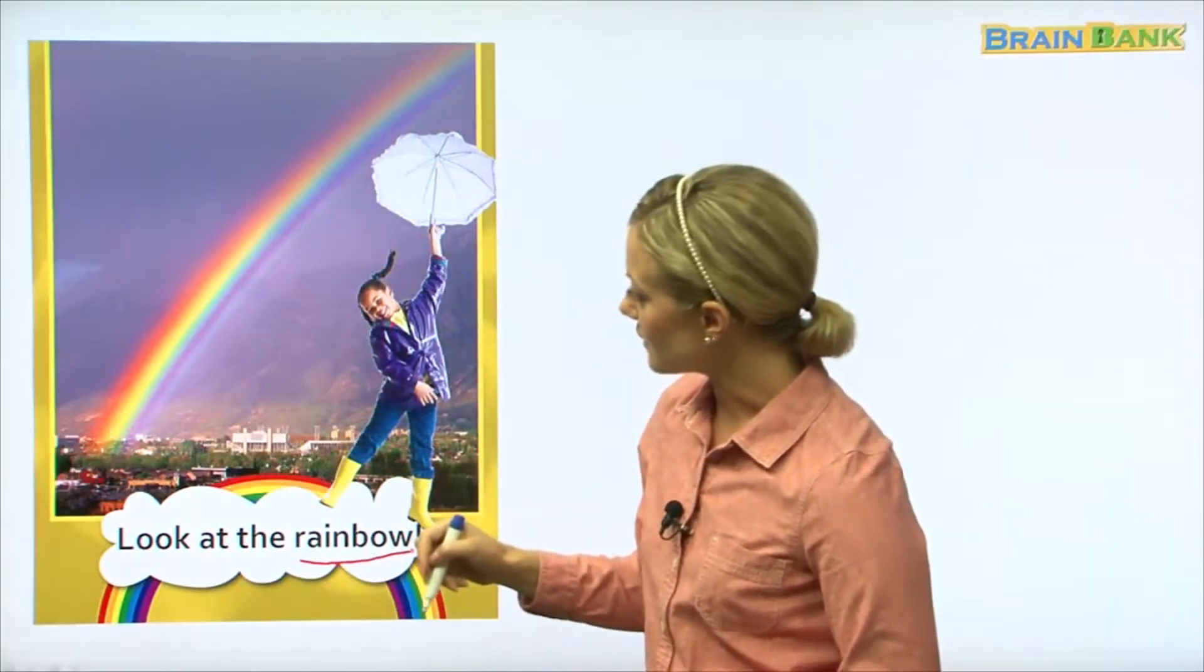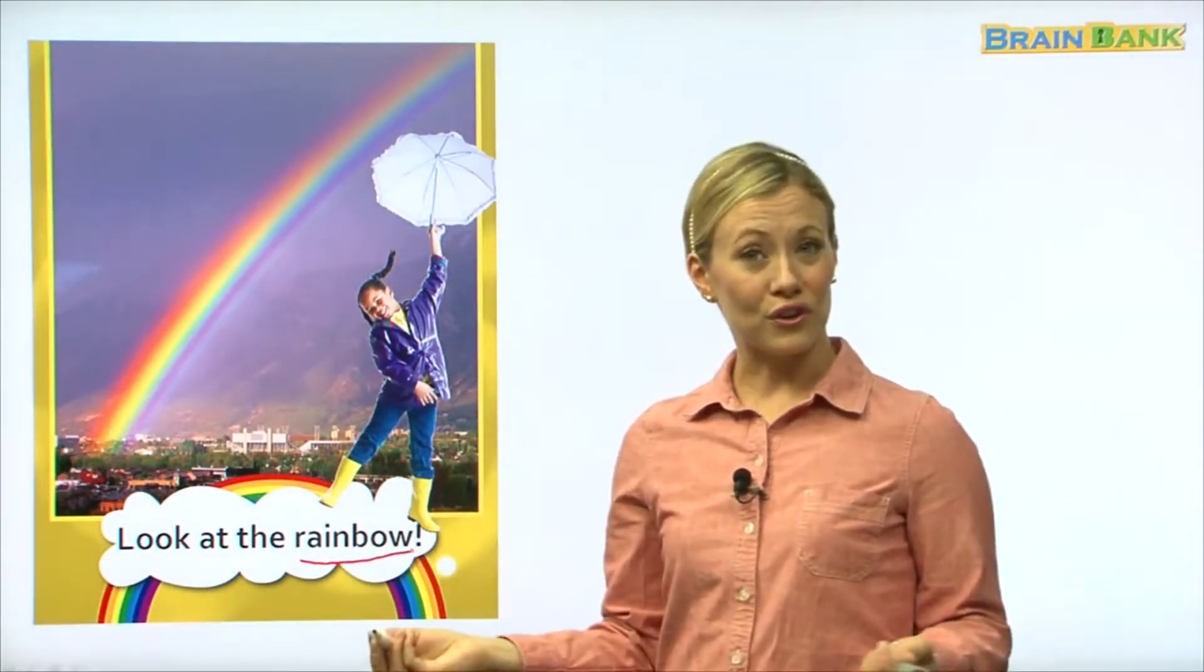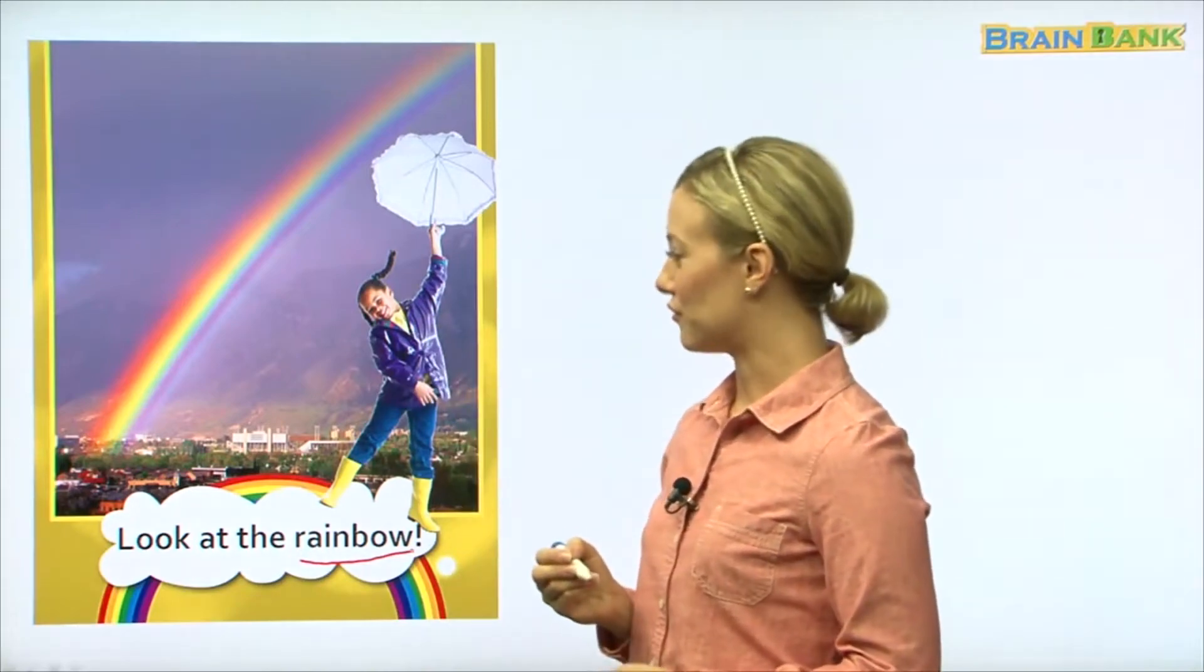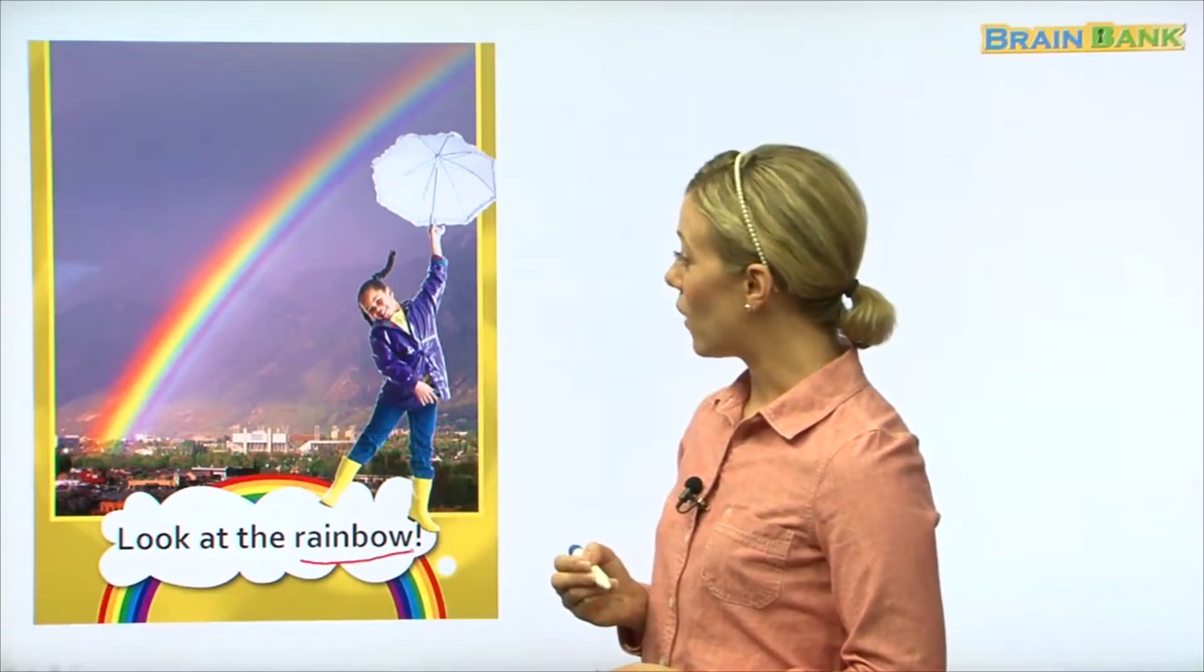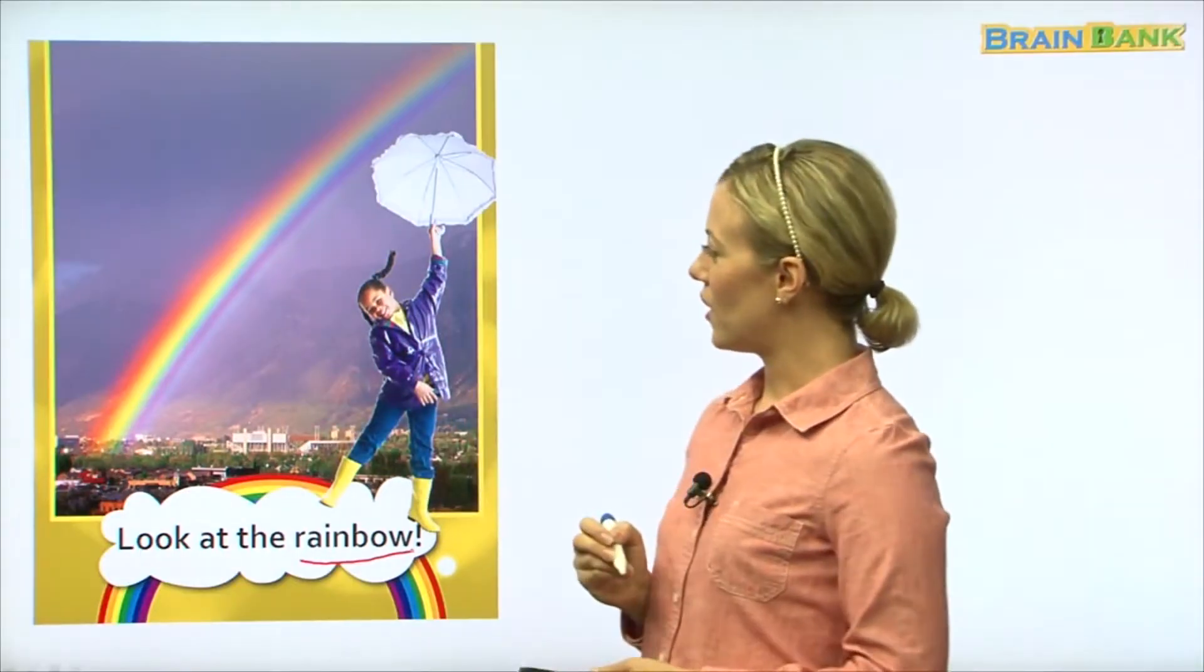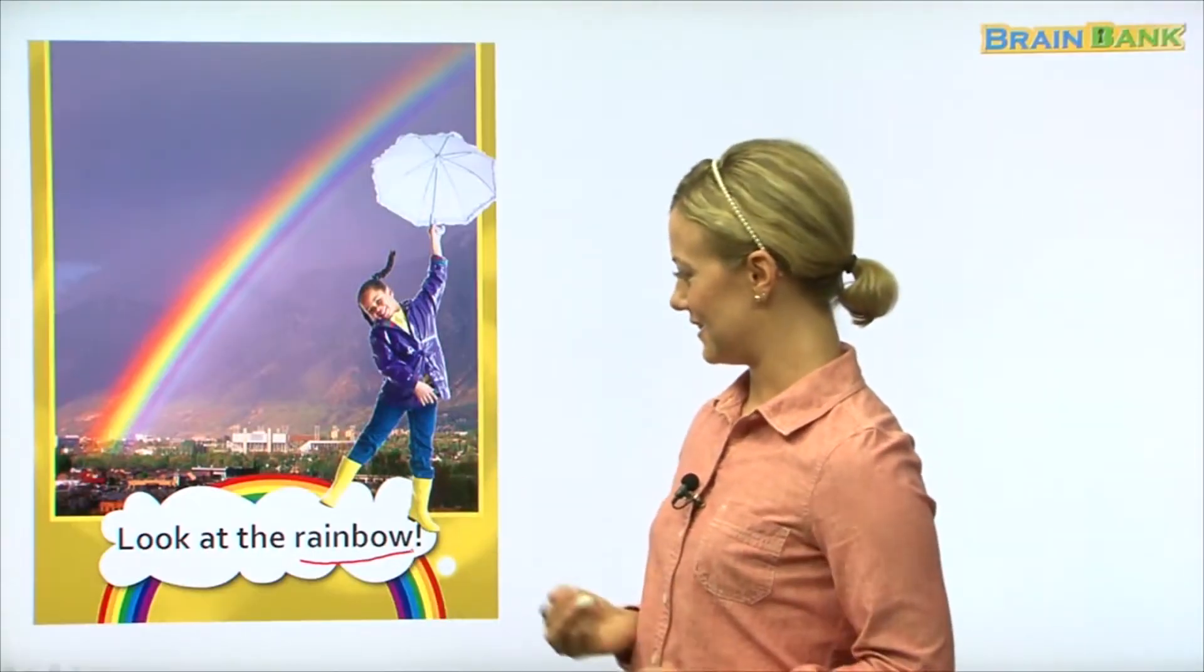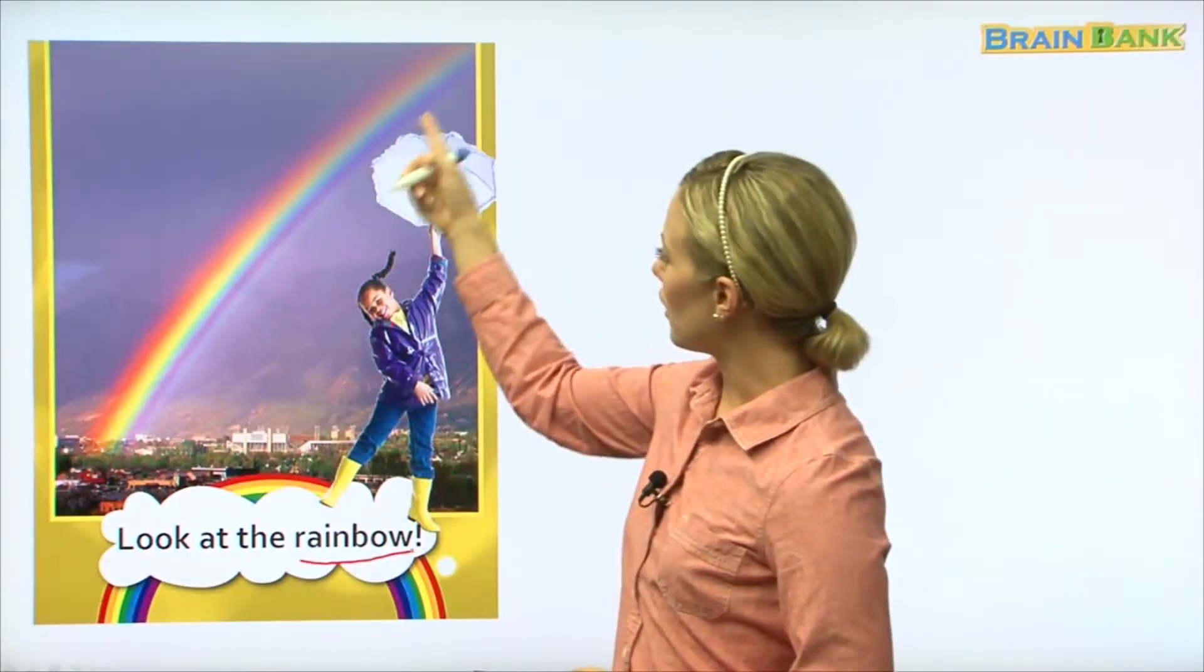Now, do you know what makes a rainbow? A rainbow is just light. It's a reflection of light. So the beautiful colors are just light in the sky. We can't touch it, it's just light.